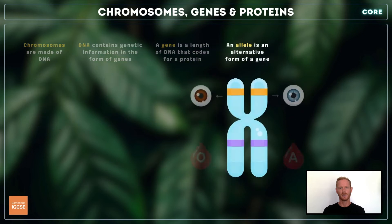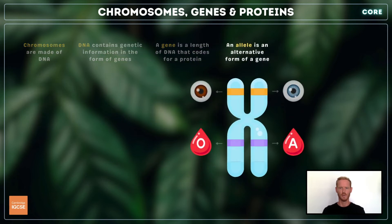Genes come in different forms called alleles, which produce variation in the trait that the gene controls. For example, there are different alleles of the gene that determines eye colour.